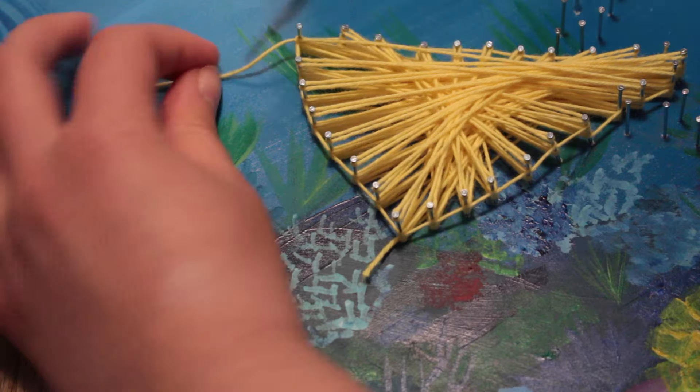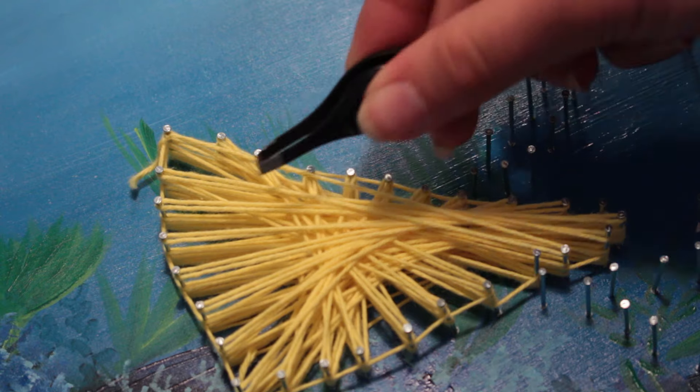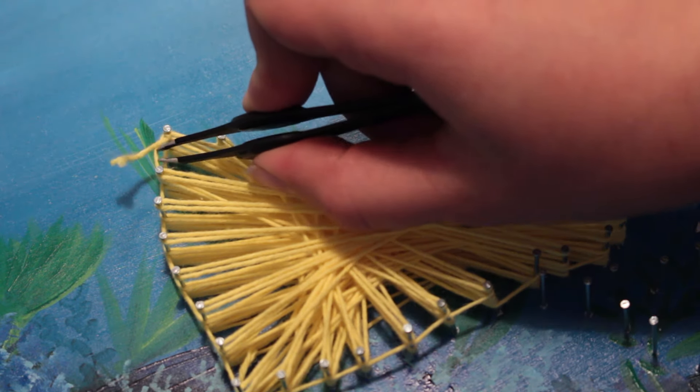Then cut some of the excess yarn off, not too much because then it will unravel. And then take a tweezer and just try to hide it in between all of the other yarns.